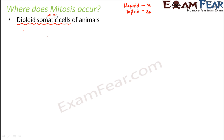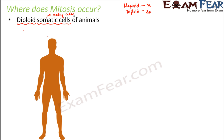Somatic cells are the body cells. Animals have two types of cells: the body cells, which are somatic cells, and the specialized sex cells or gametes. The body cells are all diploid whereas the specialized sex cells are haploid. For example, in human beings, there are 46 chromosomes or 23 pairs. Out of that, 22 pairs are somatic cells which are diploid, whereas one pair is the specialized sex cells which are haploid. So mitosis occurs in diploid somatic cells of animals — all cells except the sex cells are diploid.